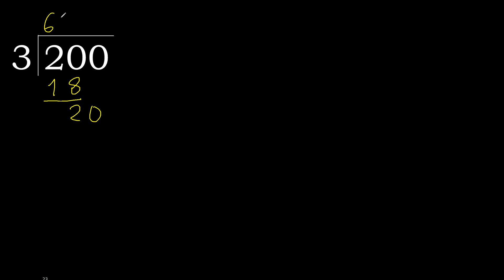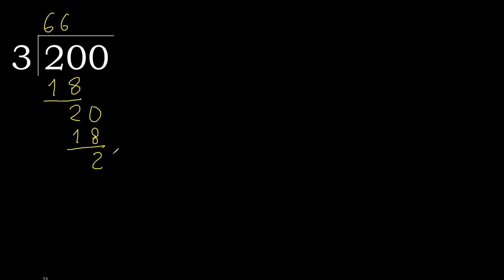20: 3 multiplied by 6 is 18, not greater. Subtract. Next — there is no number, therefore complete. Always complete with 0, here with a point. Complete. Point.